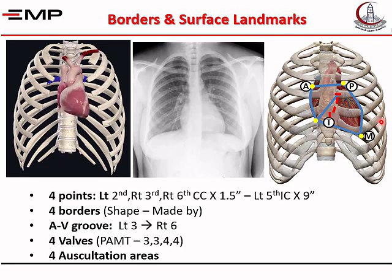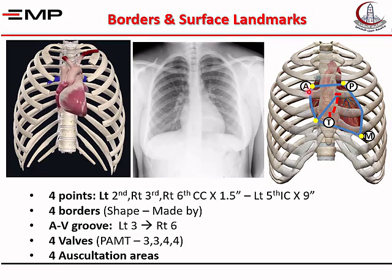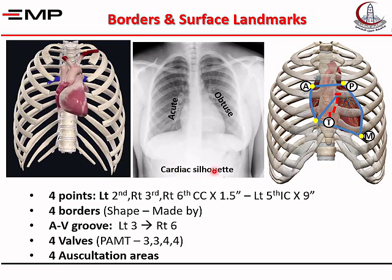The sites of auscultation of the four valves: the pulmonary radiates blood upward and is heard in the left second intercostal space close to the sternum. The aorta pushes blood upward through the ascending aorta and arch, so it is better heard in the right second intercostal space close to the sternum. The mitral is heard over the apex — left fifth intercostal space just below the left nipple. The tricuspid is heard behind the lower part of the sternum. This is the cardiac silhouette with the obtuse border and the acute border.